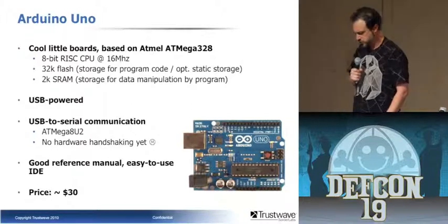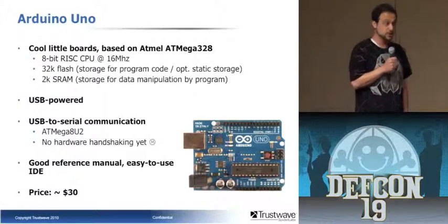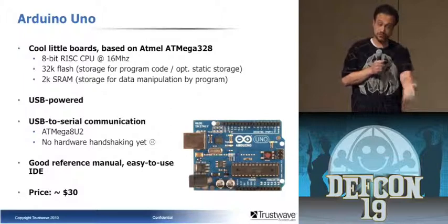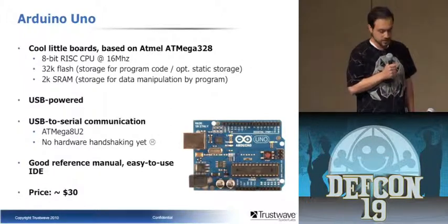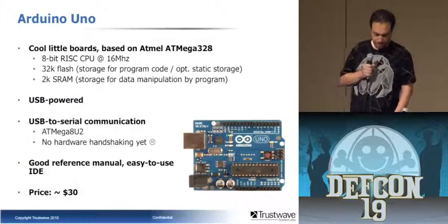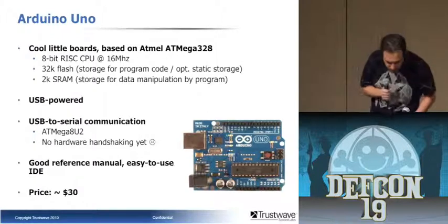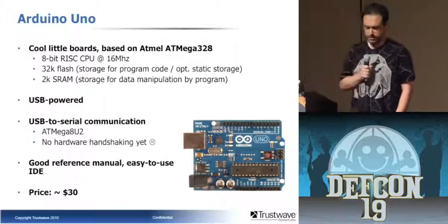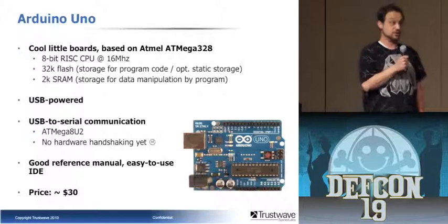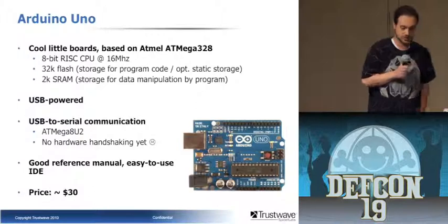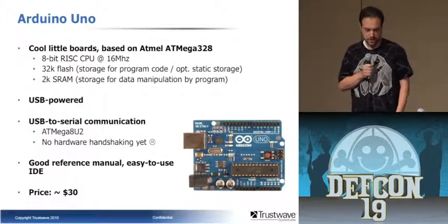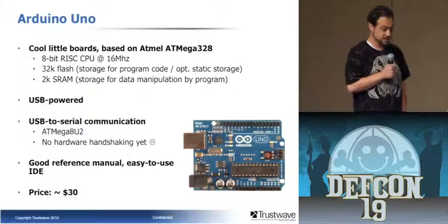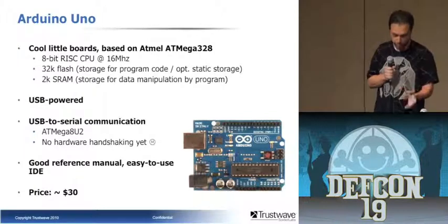2K of SRAM is where you store your dynamic data structures. Network data is, if anything, dynamic — you have to store it in SRAM. It's USB-powered with serial communication via the ATmega 8U2 chip. The only reason I bring that up is there's no hardware handshaking — no RTS/CTS. I almost had to write XON/XOFF on this thing. So I just made it run slow: 9,600 baud, which is the default speed. One of my limitations is 9,600 baud.